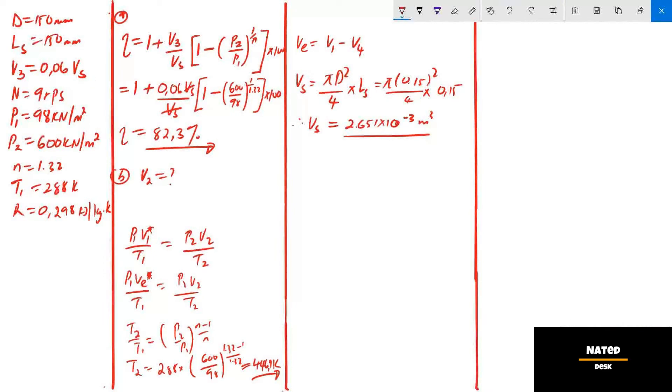After we calculate V3 from the statement that says free volume V3 is 6% of the stroke volume Vs, then V3 equals 1.59 times 10 to the exponent minus 3 cubic meter.